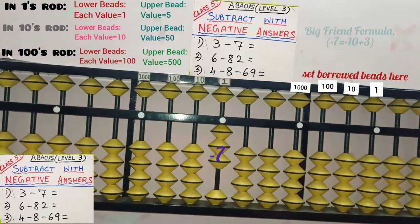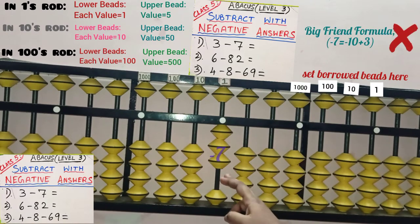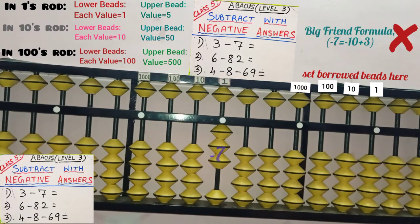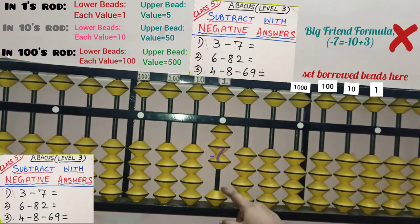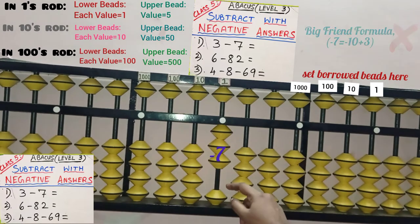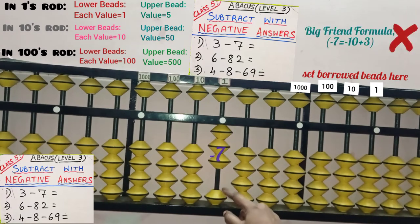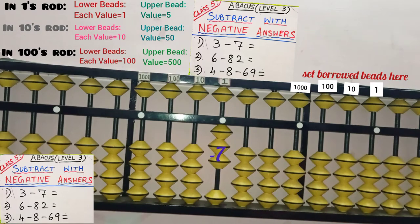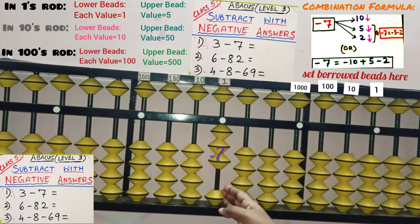We should check big friend. But big friend is also not possible here because 7's big friend is 3. In question, minus 7 means we need to add 3 here, but we are having only 1 bead to add. Hence, big friend is also not possible here. Now apply combination for subtracting 7.